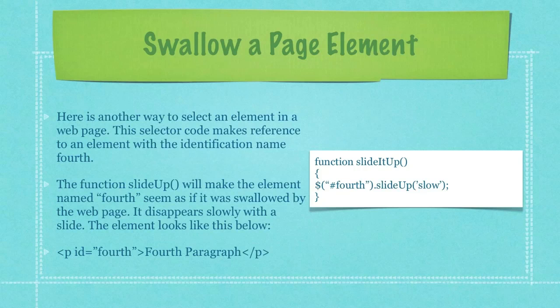Here is another way to select an element in a web page. The selector code makes reference to an element with the identification name 'fourth'. The slideUp function will make the element named 'fourth' seem as if it was swallowed up by the web page — it disappears slowly with a slide — and the actual element you can see here in the third bulleted item in the lower left-hand side of your screen.